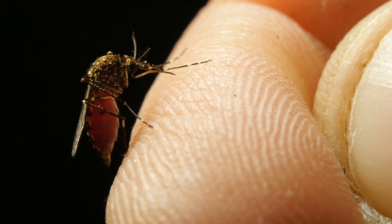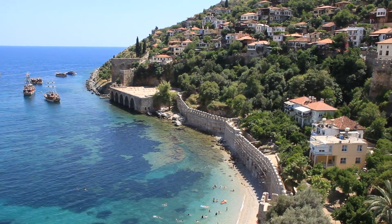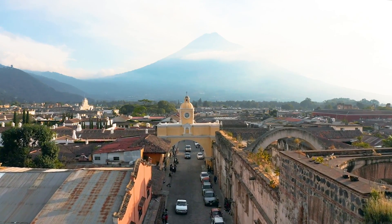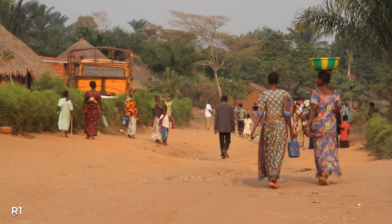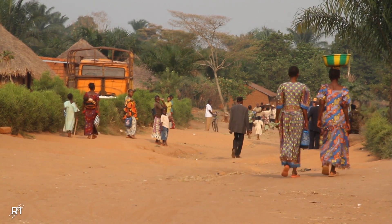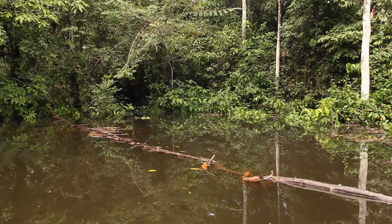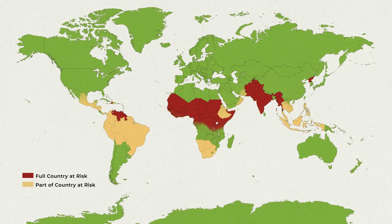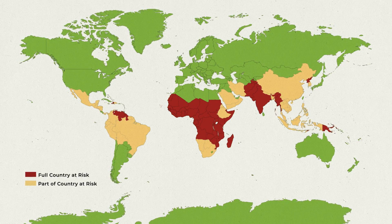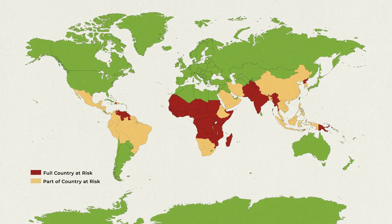Most of us probably think of malaria as a disease confined to the tropics. It thrives in Southeast Asia, the Eastern Mediterranean, parts of Central and South America, and Africa, which carries most of the global malaria burden. As of 2017, 87 countries had ongoing malaria transmission, with places like the US and Europe appearing to be safely off the list.